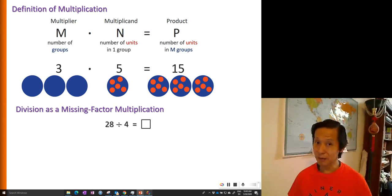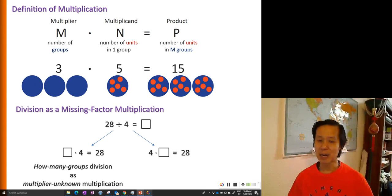The factor could be a multiplier. So in this case, it will be the number of groups that we do not know, that we want to find. So this is called the how many groups type of division. Or in terms of multiplication is called the multiplier unknown multiplication.